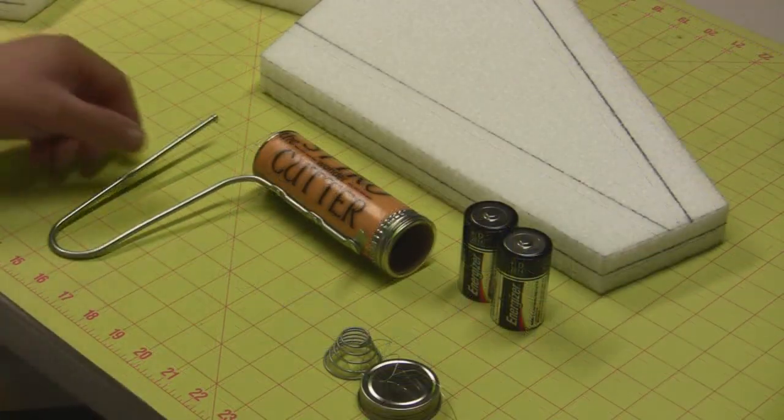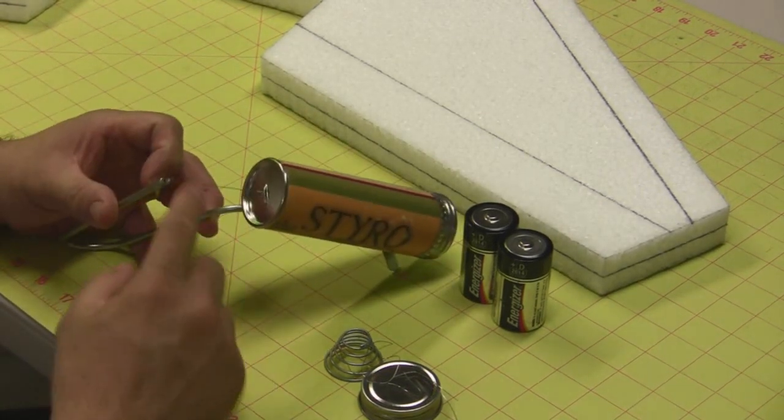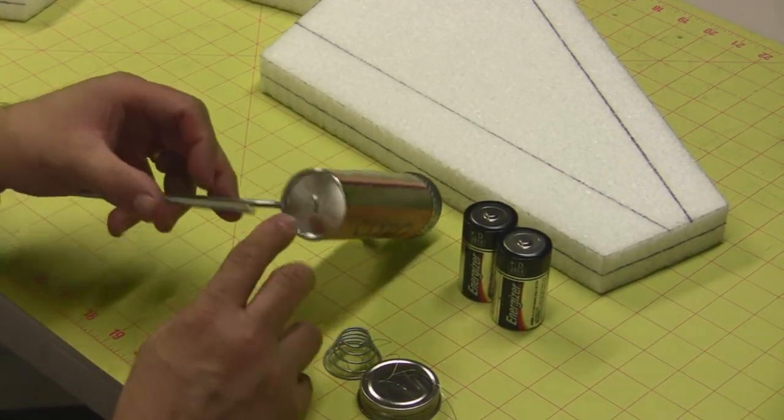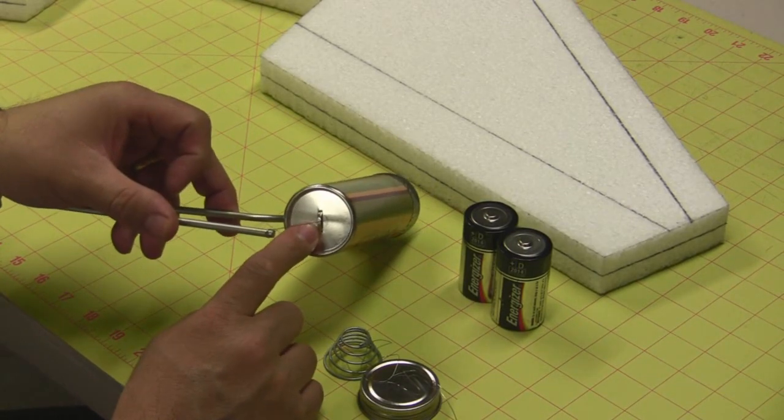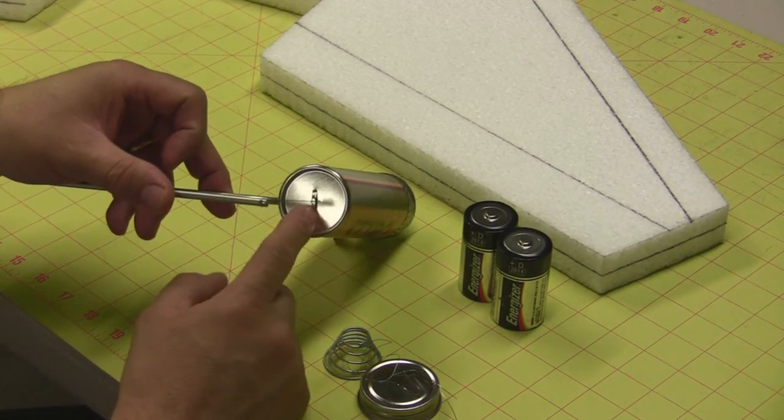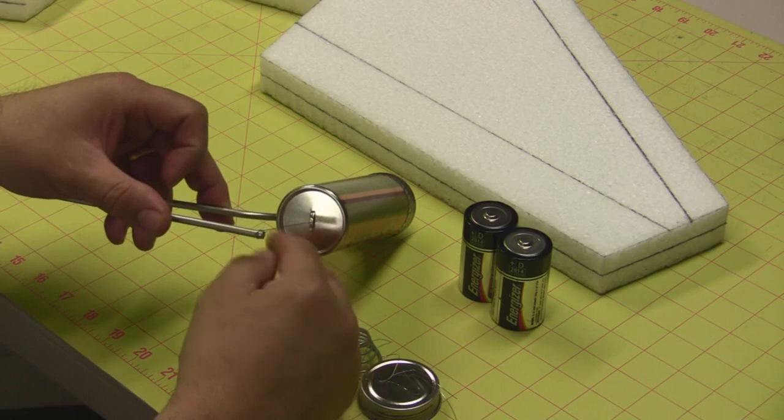The first thing you'll want to do is connect the hot wire piece because it doesn't come attached. There's a loop on the cap that you slip the wire through, loop it around, and twist it around itself.